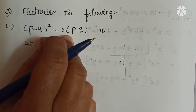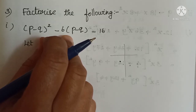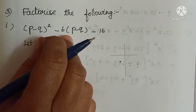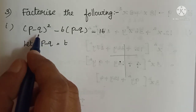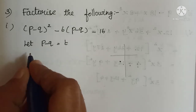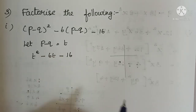Now see the first sum: (p-q) whole squared minus 6 into (p-q) minus 16. In a previous Roman we tried a model like this — a plus b whole squared plus 9 into (a+b) plus 18. The bracket inside expression is the same. So here I am going to take p minus q equal to some alphabet t. Let p minus q equal to t. So the given expression we can write as t squared minus 6t minus 16.